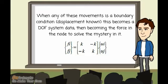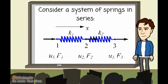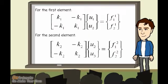Where the matrix K is the stiffness matrix of the element. Now, consider a system of springs in series. For the different elements, the systems are...